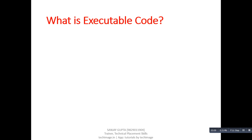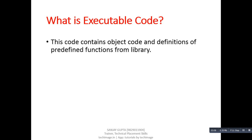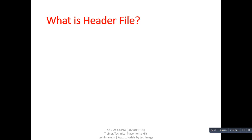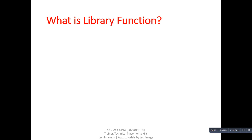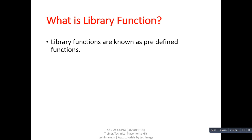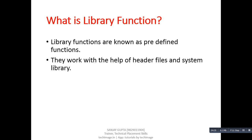Next question: what is executable code? Answer: this code contains object code and definitions of predefined functions from the library. This code is written in binary language. Next question: what is a header file? Answer: a header file contains declarations of predefined functions. Next question: what is a library function? Answer: library functions are known as predefined functions; they work with the help of header files and the system library.